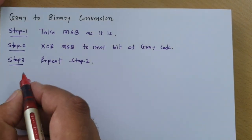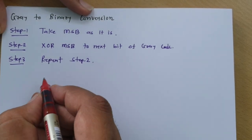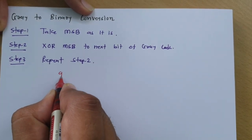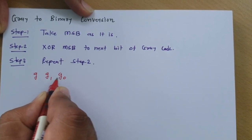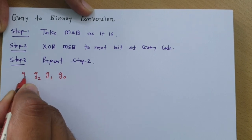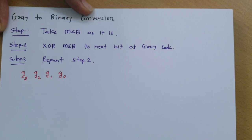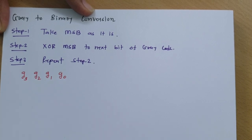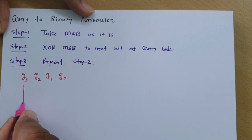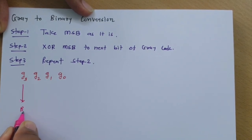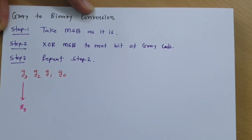Now let us solve this as a functional representation. If I have a 4-bit gray code with bits G0, G1, G2, and G3, and we want to transfer it into binary — the first step is to take the MSB as it is. So G3 equals B3.